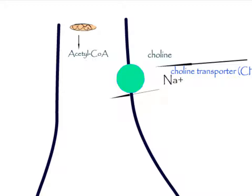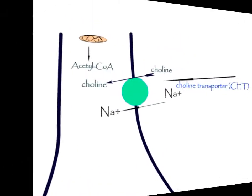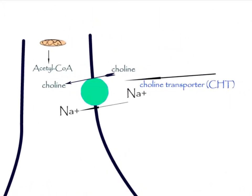Acetyl coenzyme A is synthesized in mitochondria, which are present in large numbers in the nerve ending. Choline is transported from the extracellular fluid into the neuron terminal by a sodium-dependent membrane choline transporter. This symporter can be blocked by hemicholinium.